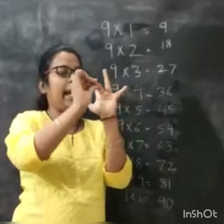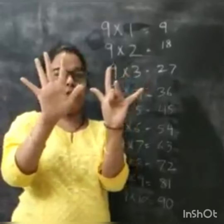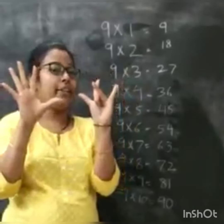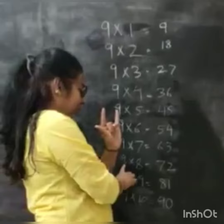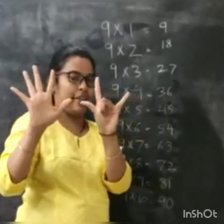Now I will close my eighth finger. So 7 over here. So 7, 2. 9 times 8 is 72.